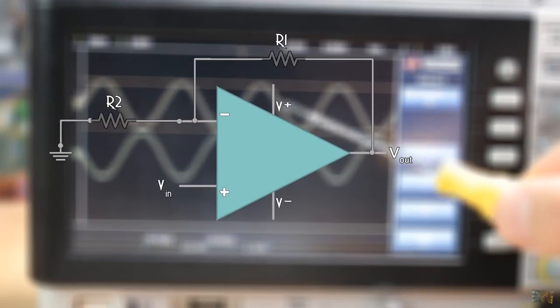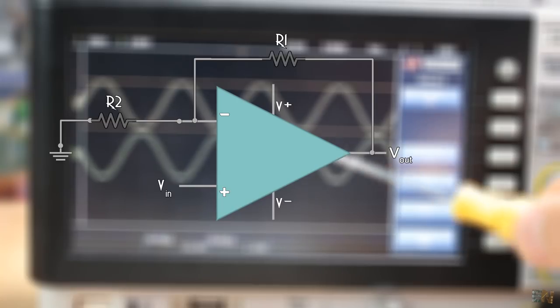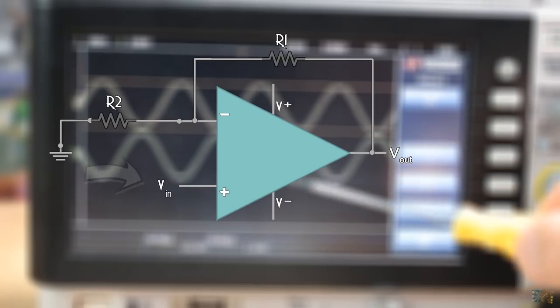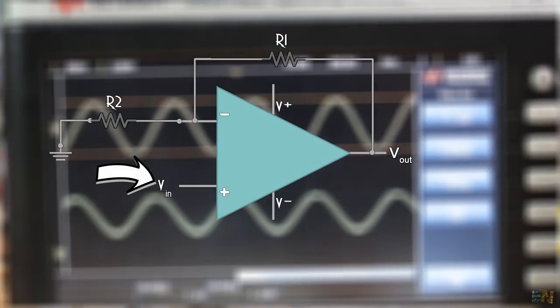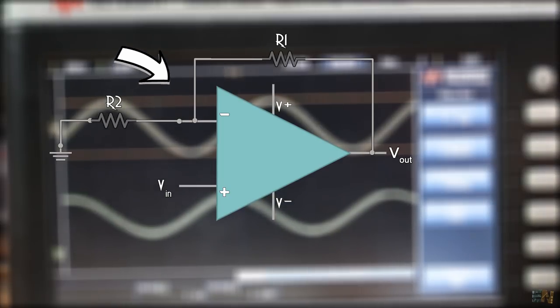Finally, let's talk about the non-inverting configuration. This is its schematic. Now the positive pin is our main input of the circuit and the feedback is still connected at the negative input.